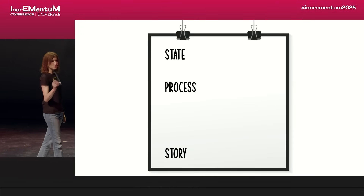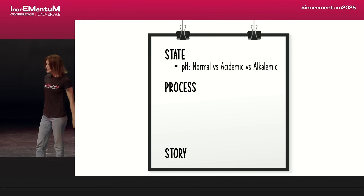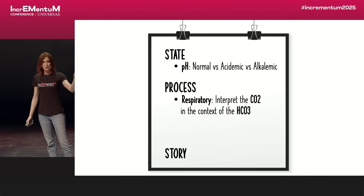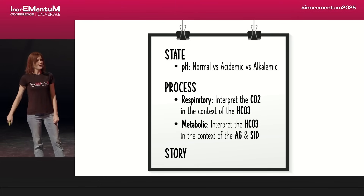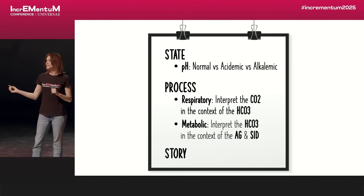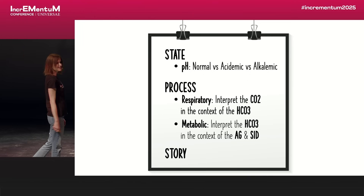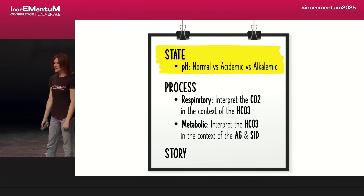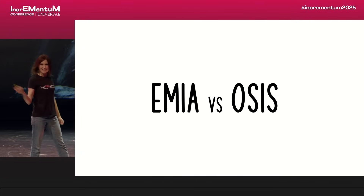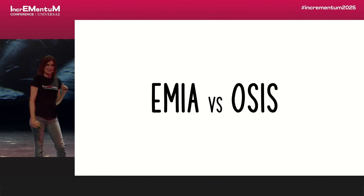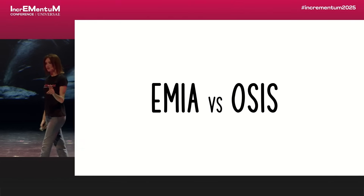You're not going to find state, process, story in a textbook — I back-calculated it from what I actually do at the bedside. Using this systematic approach allows me to analyze acid-base physiology in a way that's both sophisticated and functional with a sick patient. State is easy: is your pH normal versus acidemic versus alkalemic? Now, this is where I'm the annoying attending when my resident says they're acidemic, and I say they're actually acidotic — which is quite annoying, but it turns out this distinction is important.